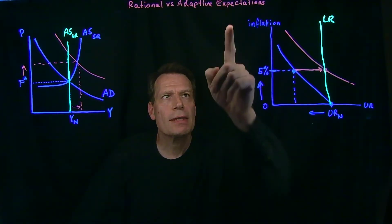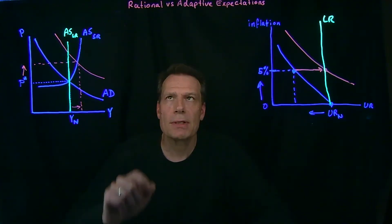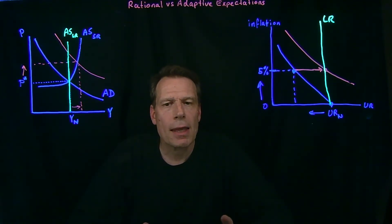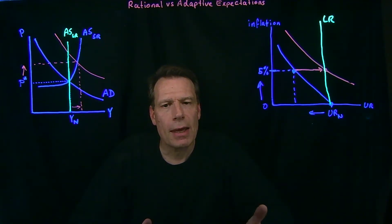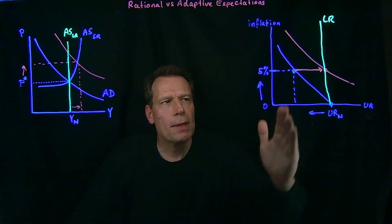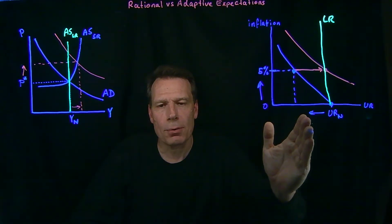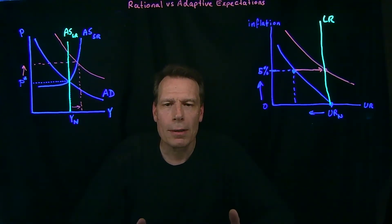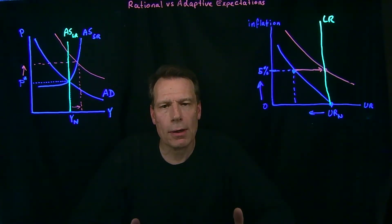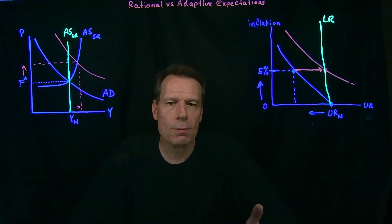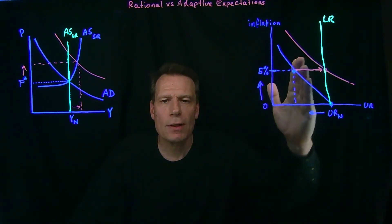Do you slowly adapt your expectations about what the new inflation rate is going to be? Or do you rationally see through things and know that the inflation rate is going to increase because your nominal wage increased? In the one case, we say you have adaptive expectations, and in the other case, we say you have rational expectations. The more adaptive your expectations, the slower they change about the rate of inflation as prices go up. That makes room for a shallower short-run Phillips curve, and more room for expansionary policy to result in temporary reductions in unemployment. So the short run is longer, the more adaptive our expectations about changing inflation are.